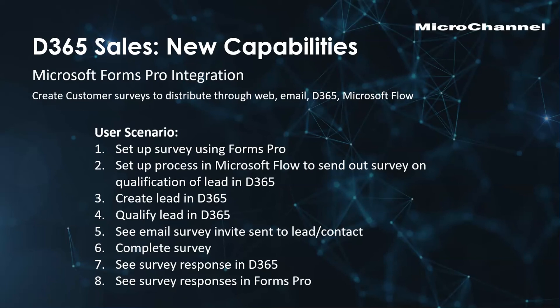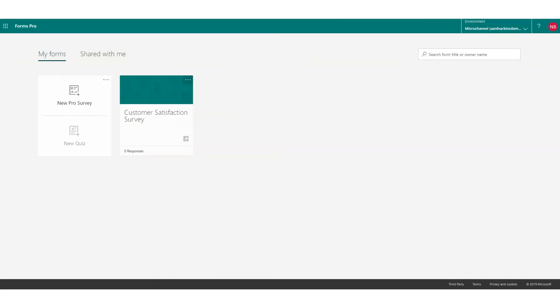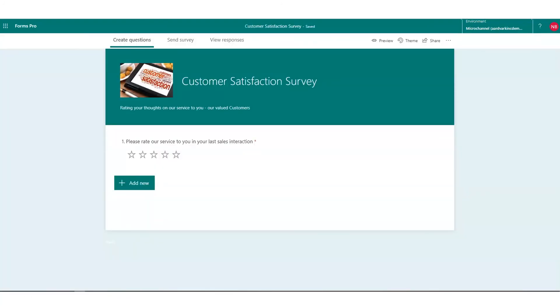Today we're going to set up a survey in Forms Pro, set up a Microsoft Flow to send out that survey, create a lead in Dynamics 365, qualify that lead, and through the Microsoft Flow and Forms Pro send out an email invite to the survey for the qualified contact. We'll then get them to complete the survey and see the responses back in both Dynamics 365 and Forms Pro. In Microsoft Forms Pro you can create new surveys and quizzes — here I've got a customer satisfaction survey that we're going to use.